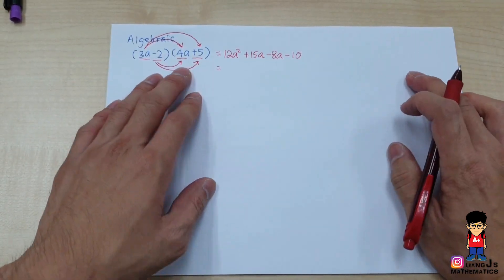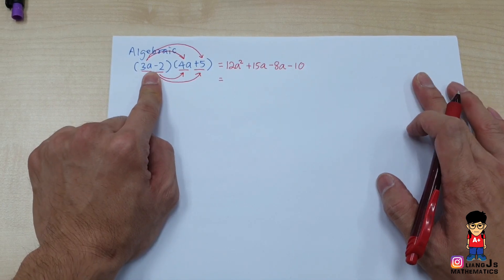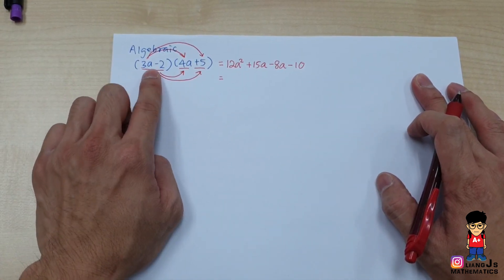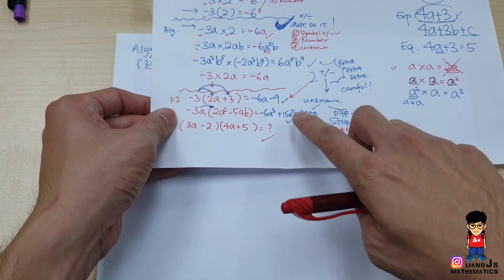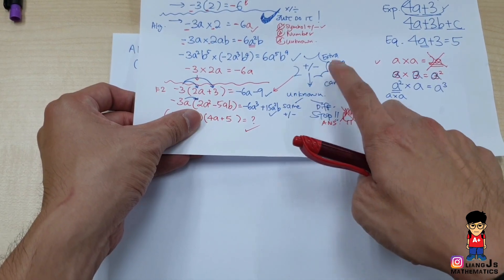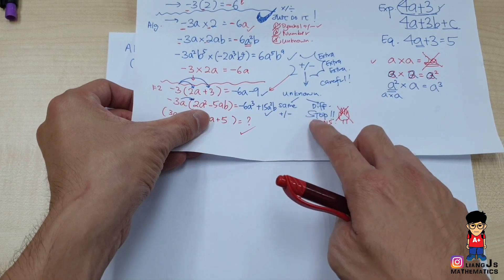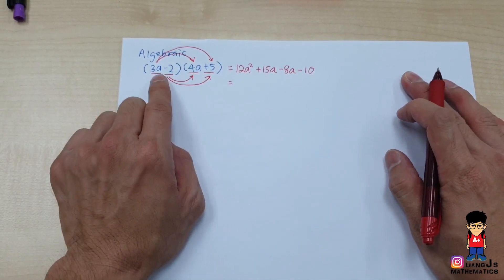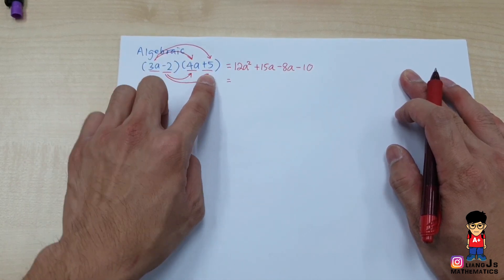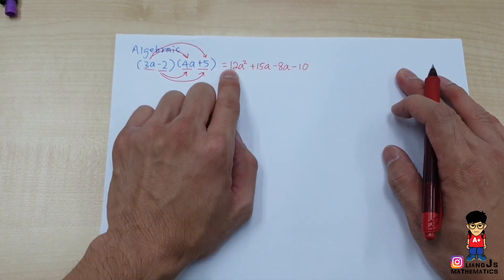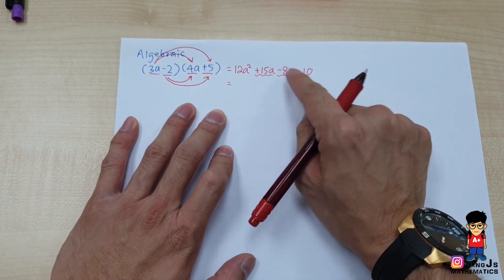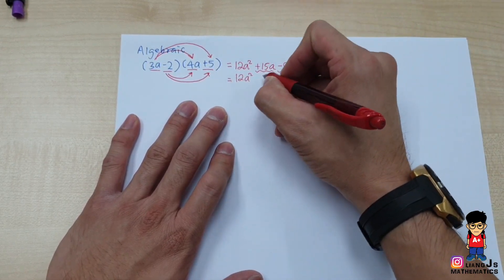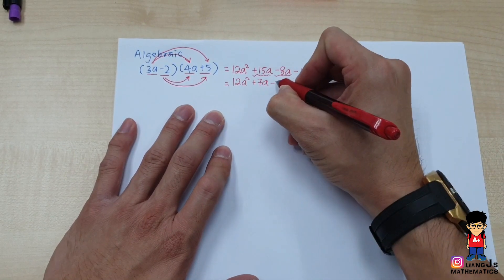The important part that confuses many students: inside the brackets, in your plus-minus point of view, same unknown you continue — different unknown you stop. Bracket means multiply, so we do it one by one. After multiplying, the only terms you can combine are the middle ones with the same unknown. So 12a squared, then plus 15a minus 8a gives plus 7a, minus 10. That's your final answer.